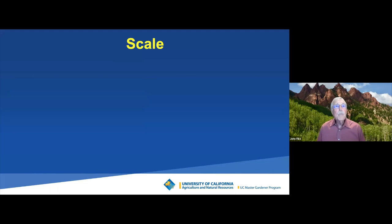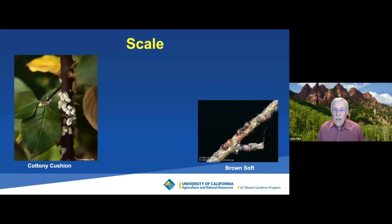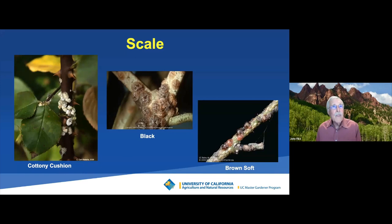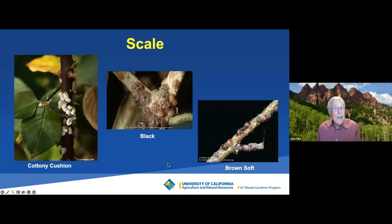There are other honeydew-producing insects. One group is called scales — there's cottony cushion scale, brown soft scale, and black scale. When scales are small nymphs, they have legs and crawl around to find a place to settle. They lose their legs and develop a kind of shell over themselves, which protects them from some predators and insecticides. They sit there, suck the juices out of the plant like an aphid, produce honeydew like an aphid, and are farmed by ants like an aphid.